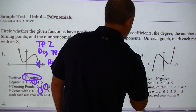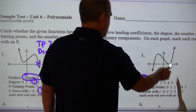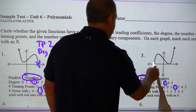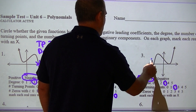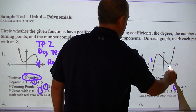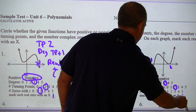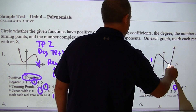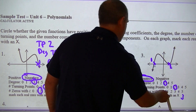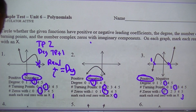This would be a positive. There are two turn points, so degree three. I've got one that slashes through and one that touches, so there are three total real zeros. If I've got three real zeros and a degree of three, that means the imaginary zeros have to be zero.